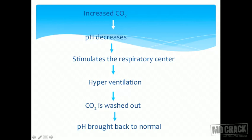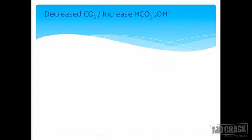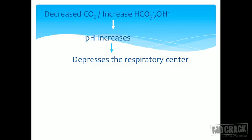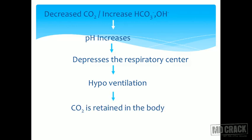Similarly, whenever carbon dioxide level has gone down — decreased carbon dioxide — or there is increased bicarbonate or hydroxyl ions, the denominator has decreased and the pH increases. Carbon dioxide is an acid, so when acid is decreased you have alkalosis — pH has increased. This depresses the respiratory system, causing hypoventilation, so carbon dioxide is retained in the body and pH is brought back to normal.